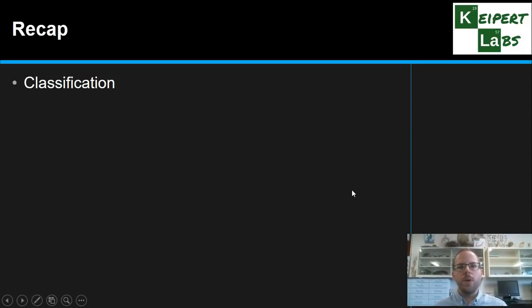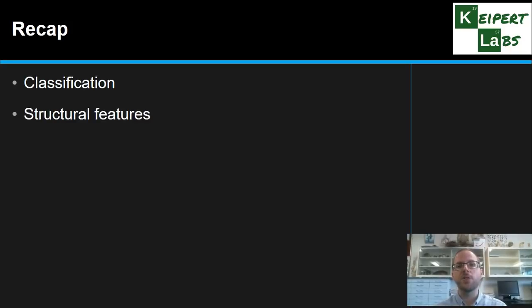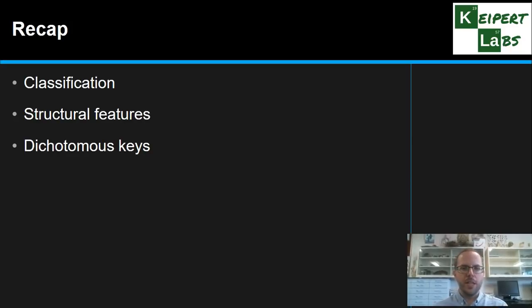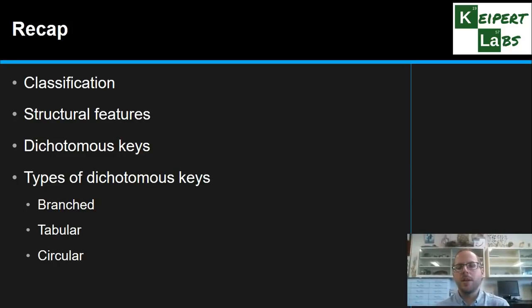So we've reminded ourselves about what we mean by classification — sorting living things into groups based on similarities and differences. It's important that we pick structural features that don't change over the life of the organism so we can have an objective, consistent system. Using a dichotomous key in order to visualise it as a diagram — these come in three types: branched, tabular, and circular. Thanks very much for watching; don't forget to like and subscribe.